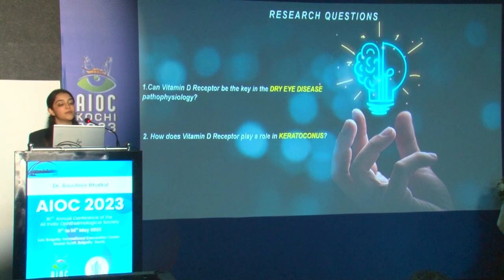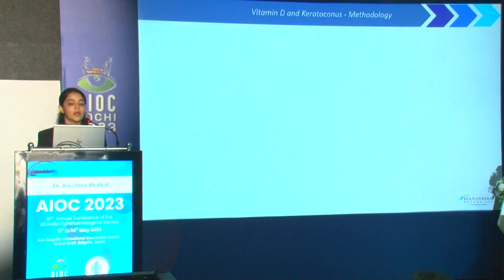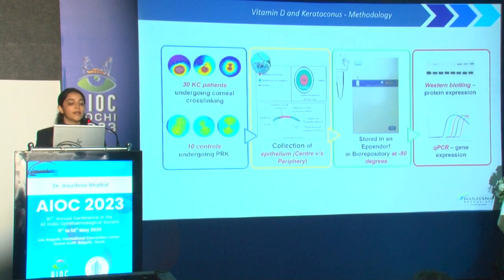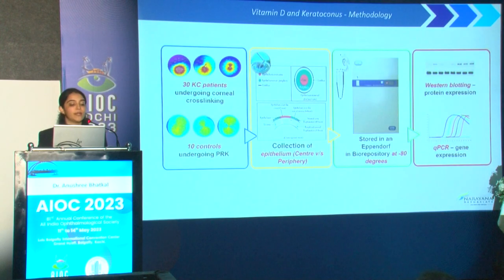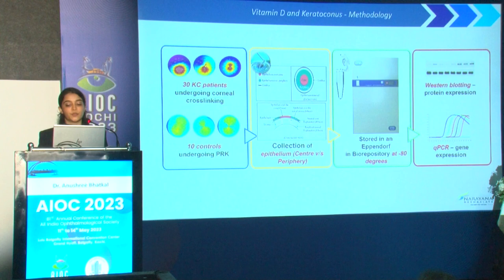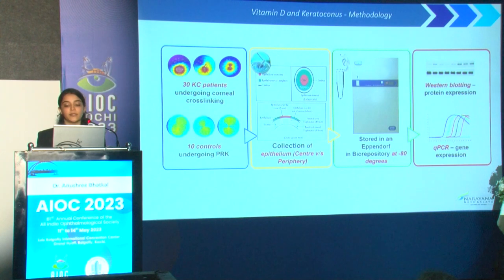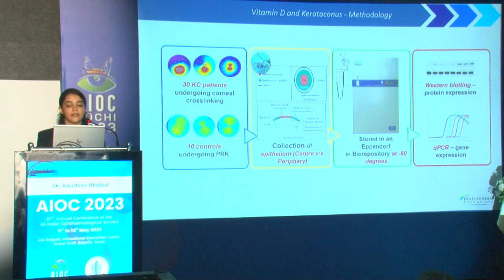The second question was: how does the vitamin D receptor play a role in keratoconus? We collected epithelium from 30 keratoconus patients and from 10 controls undergoing PRK, collecting epithelium from both the cone and the periphery. We stored samples at minus 80 degrees in our bio-repository and performed western blot for protein expression and quantitative PCR for gene expression.